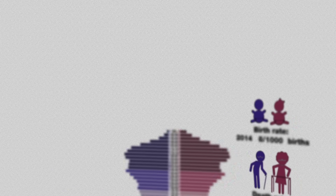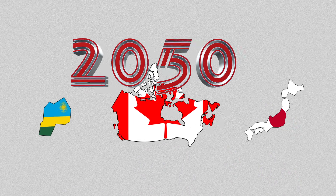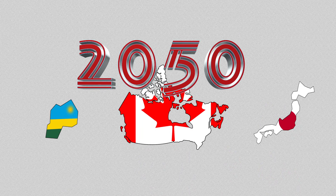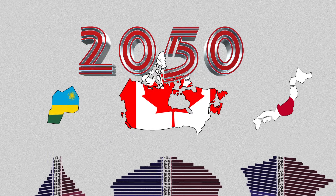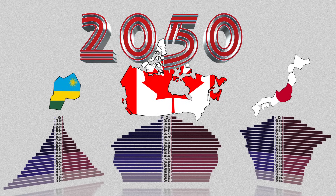Now let's take a look at the projected population pyramids for the same three countries in 2050. What do these tell us about the expected changes in each country's population? And what kinds of factors can alter the shape of these future pyramids?